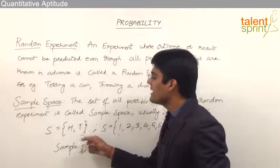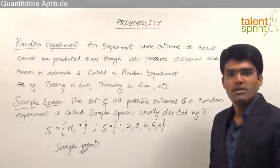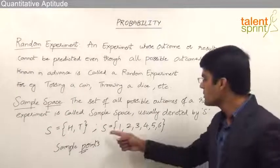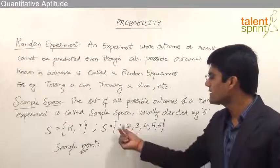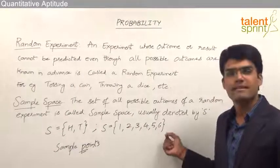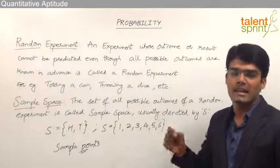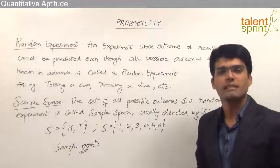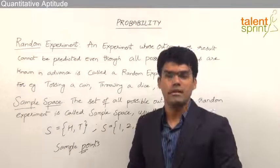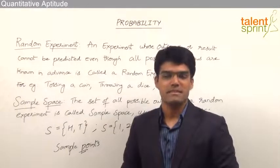So head and tail are the sample points for the sample space of tossing a coin. Likewise when we throw a dice the sample space is {1, 2, 3, 4, 5, 6} and each of these elements is known as a sample point. So a sample point is nothing but a particular outcome for an event, and the set of all possible outcomes is known as sample space.